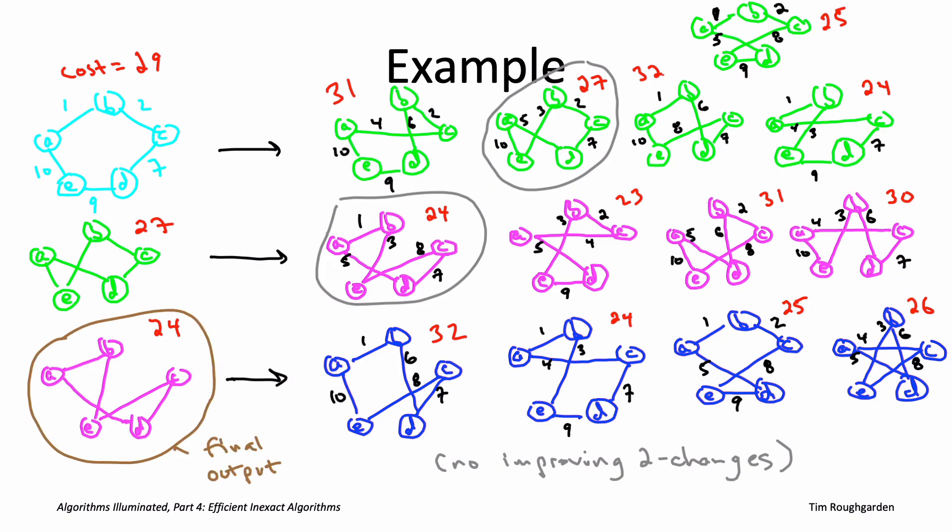As I'm sure many of you will have noticed, this cost 24 tour is not the best possible one. It's close, certainly improvement over the cost 29 that was the output of the nearest neighbor heuristic. But this algorithm did get stuck at a tour with cost only 24 when a different tour, not reachable by one two-change from this one, a different tour actually has the smaller cost of 23.